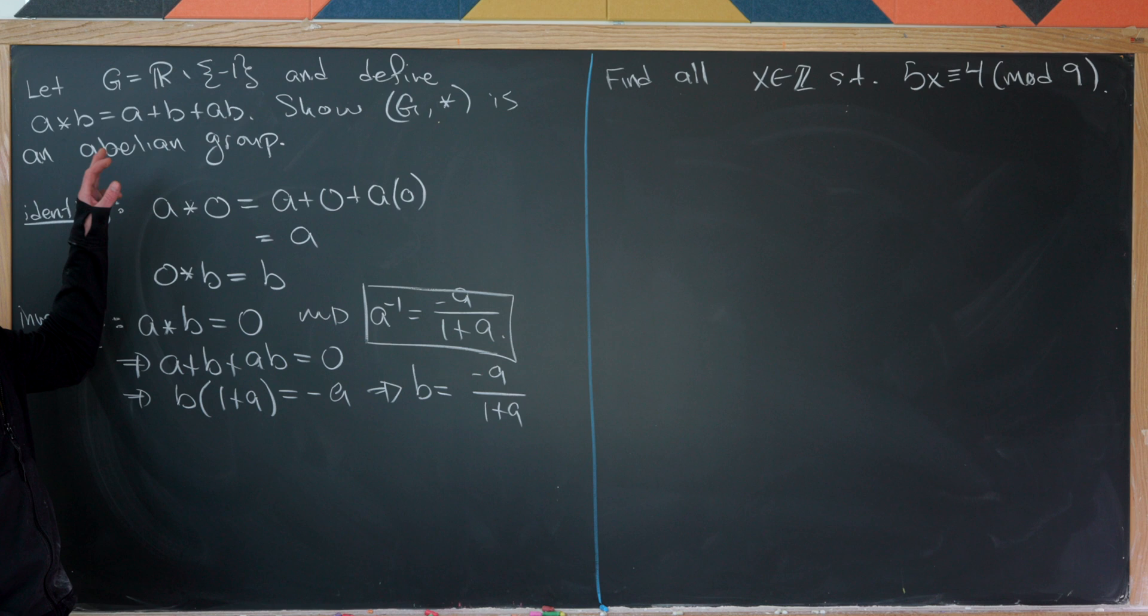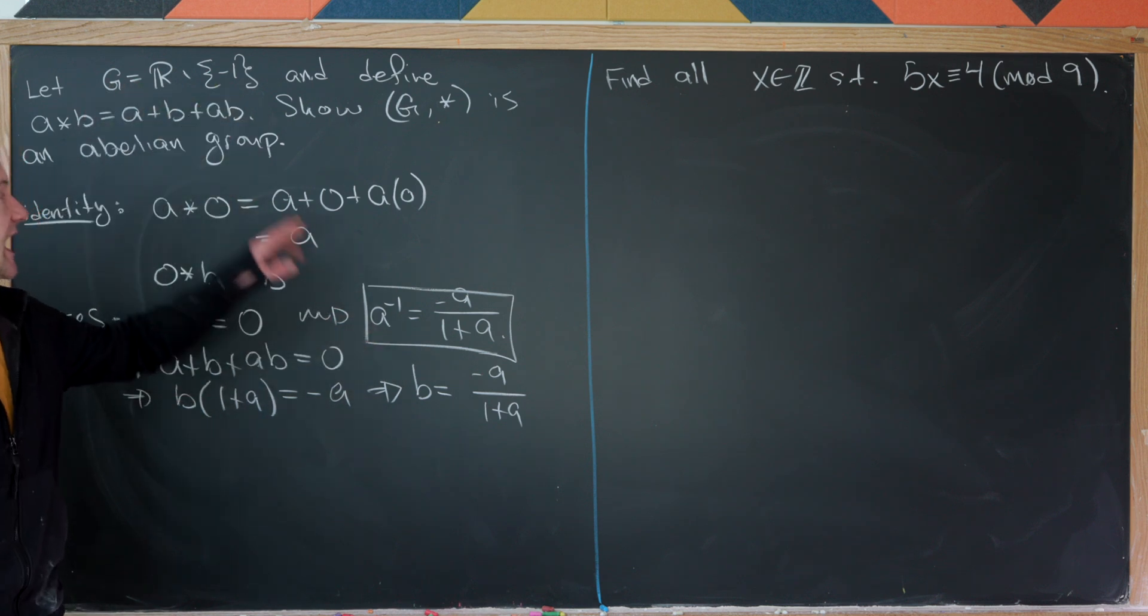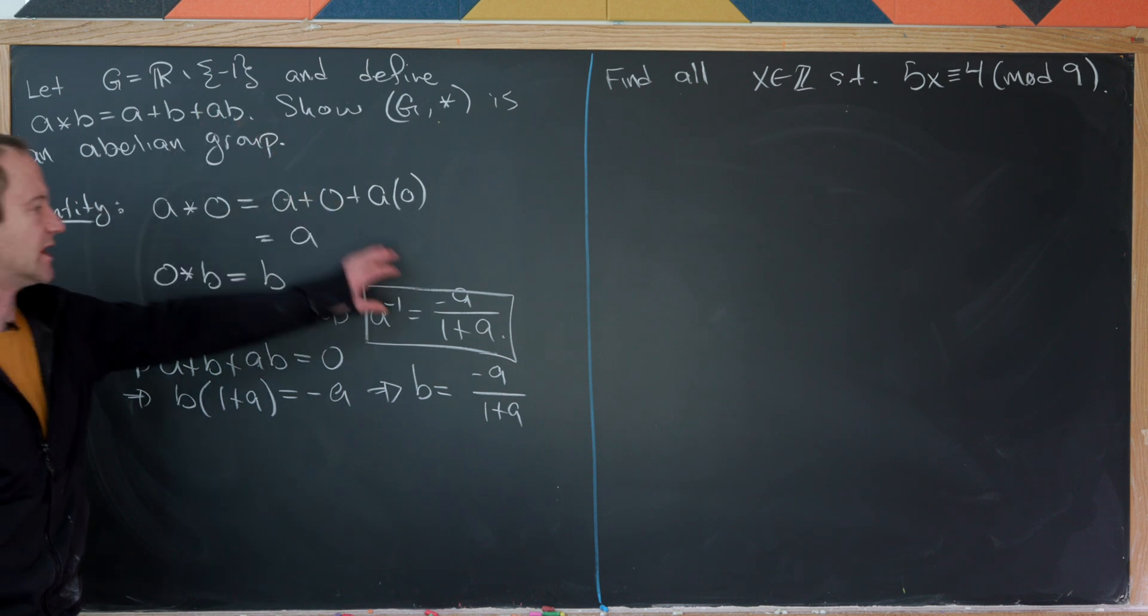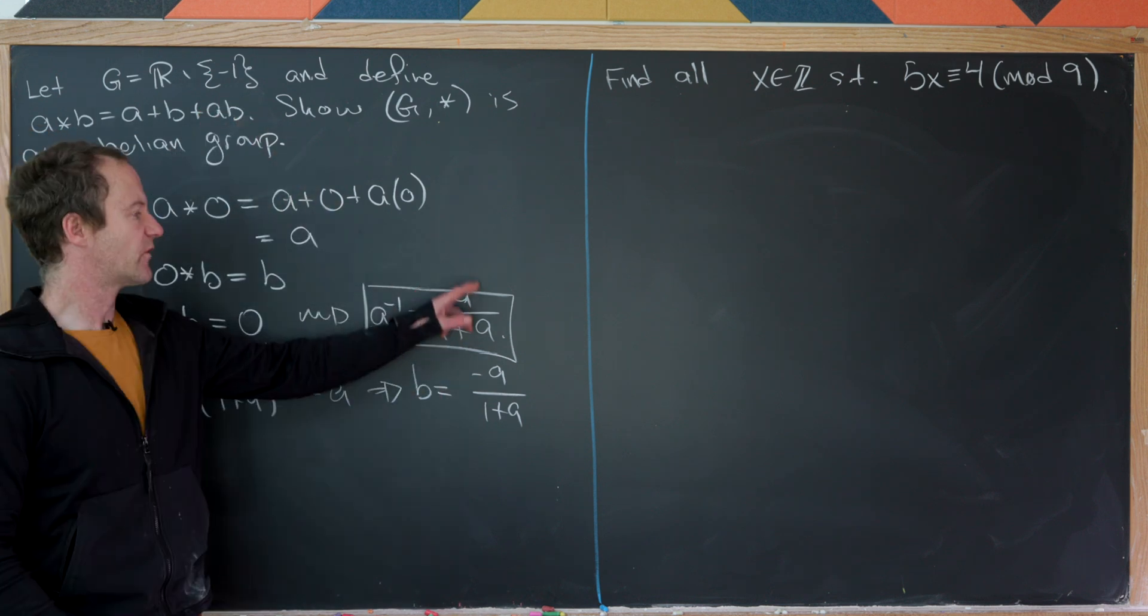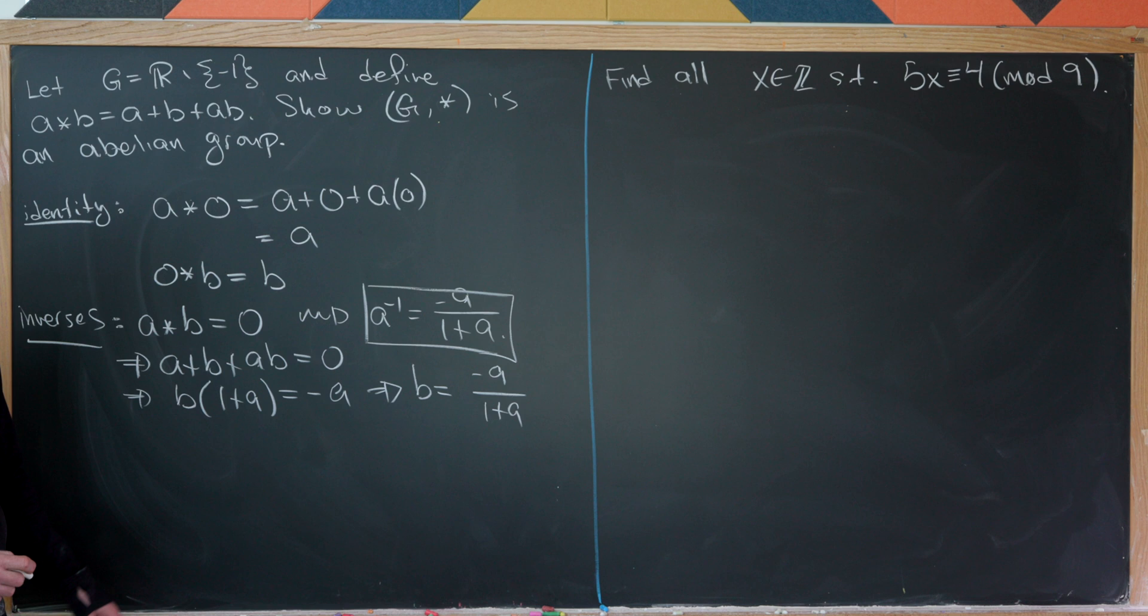Notice that since a is a real number not equal to minus 1, this makes sense. Furthermore, this object on the right-hand side can also never achieve the number negative 1 for similar reasons. So now let's maybe move on to what do we need to prove next?